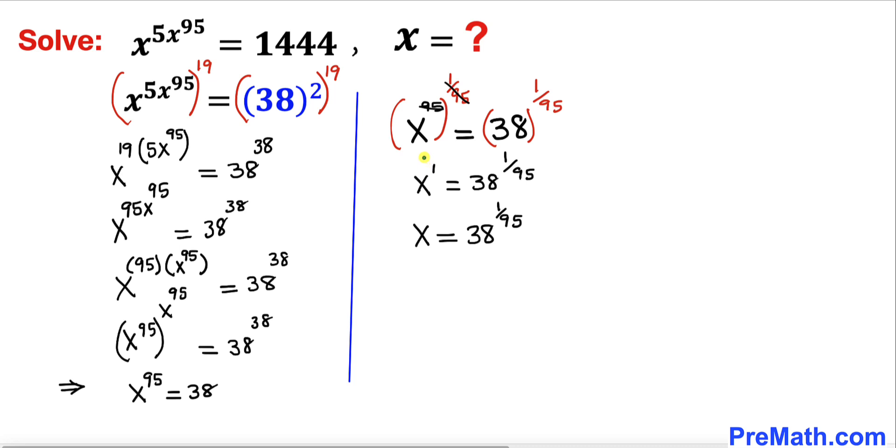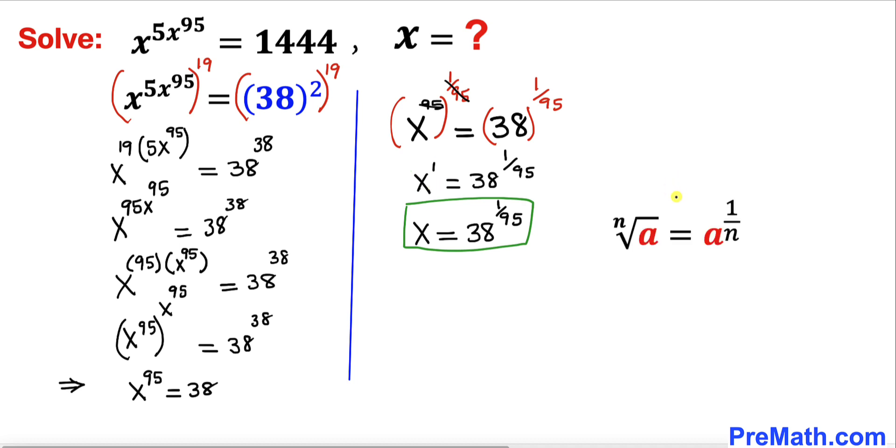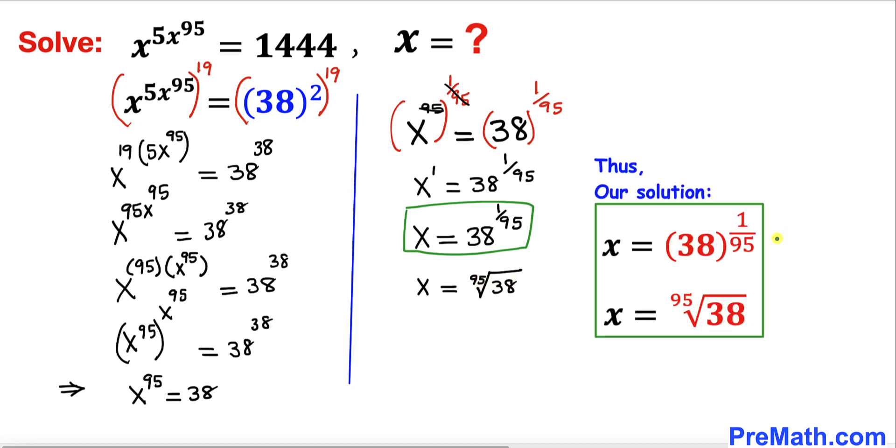And on the left hand side, x power 1 is same as x. So this is our solution. And now we are going to apply this property. So this could be written in terms of radical form as radical of 38 with index 95. And here's our solution in terms of exponential as well as radical form.